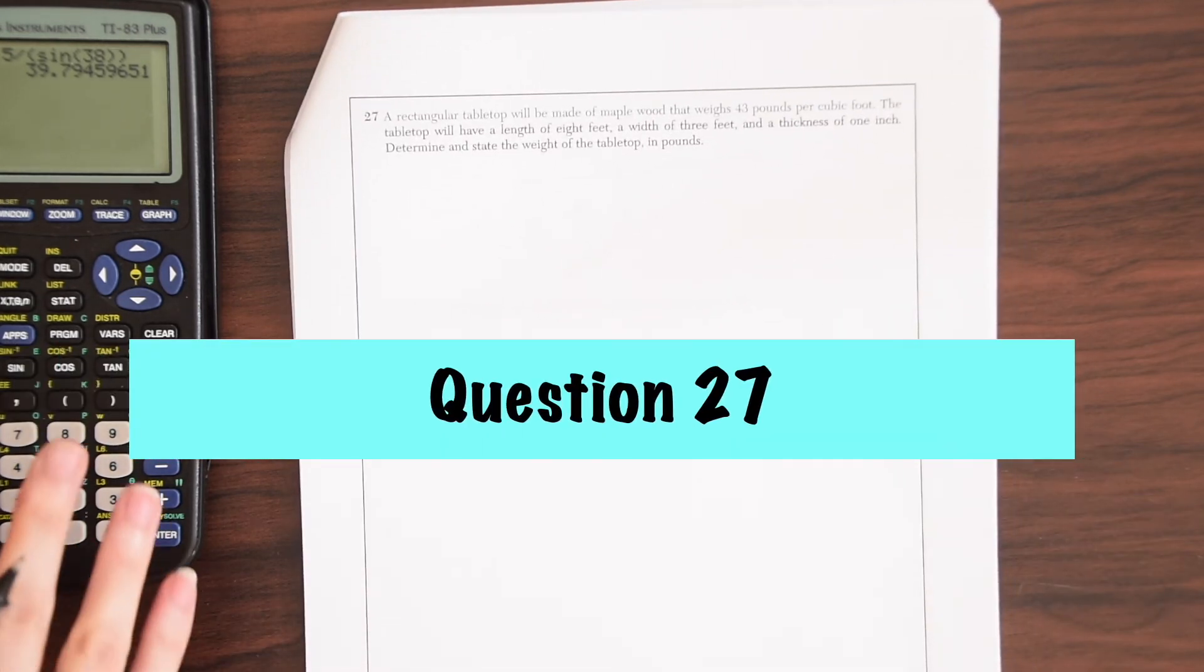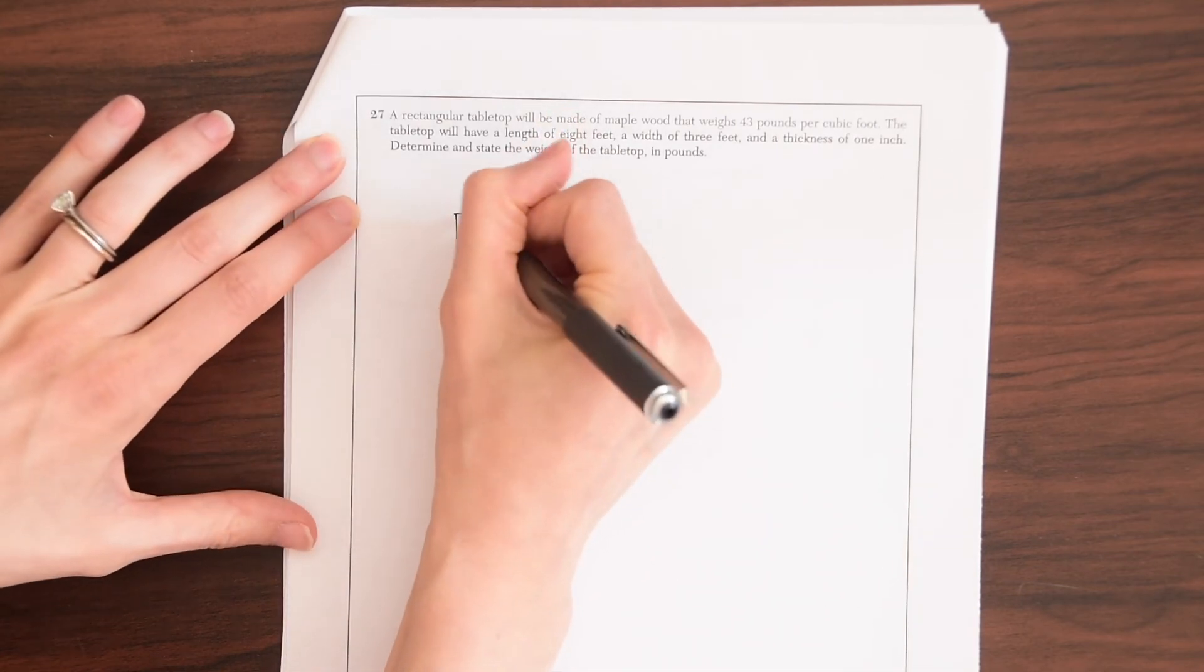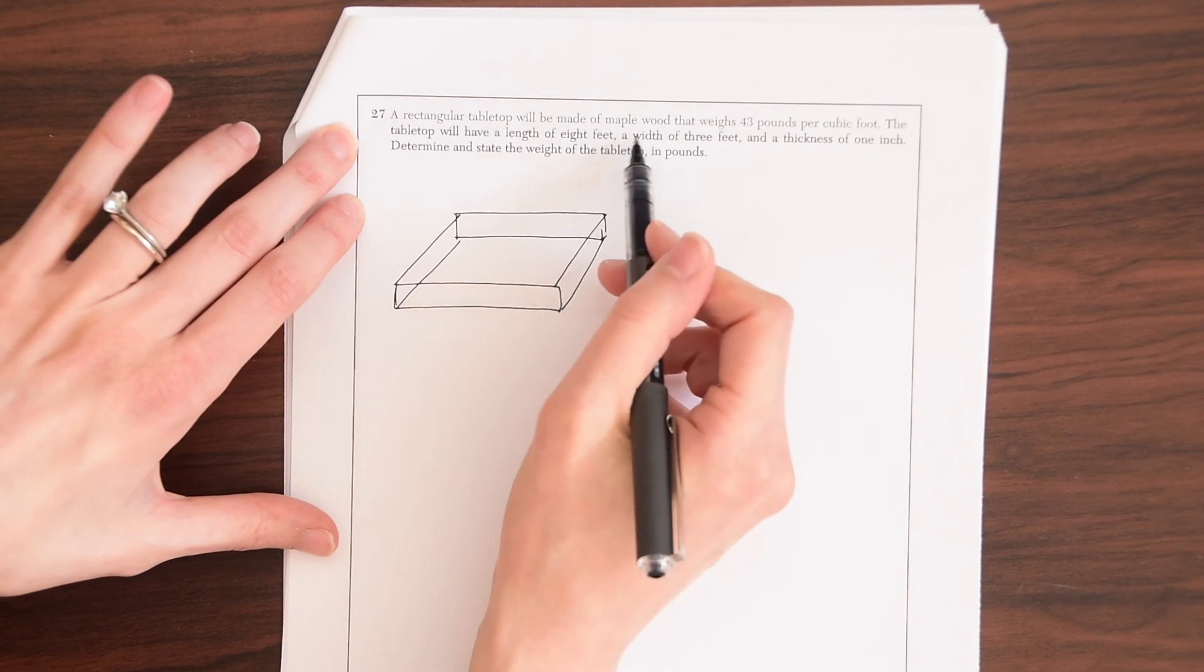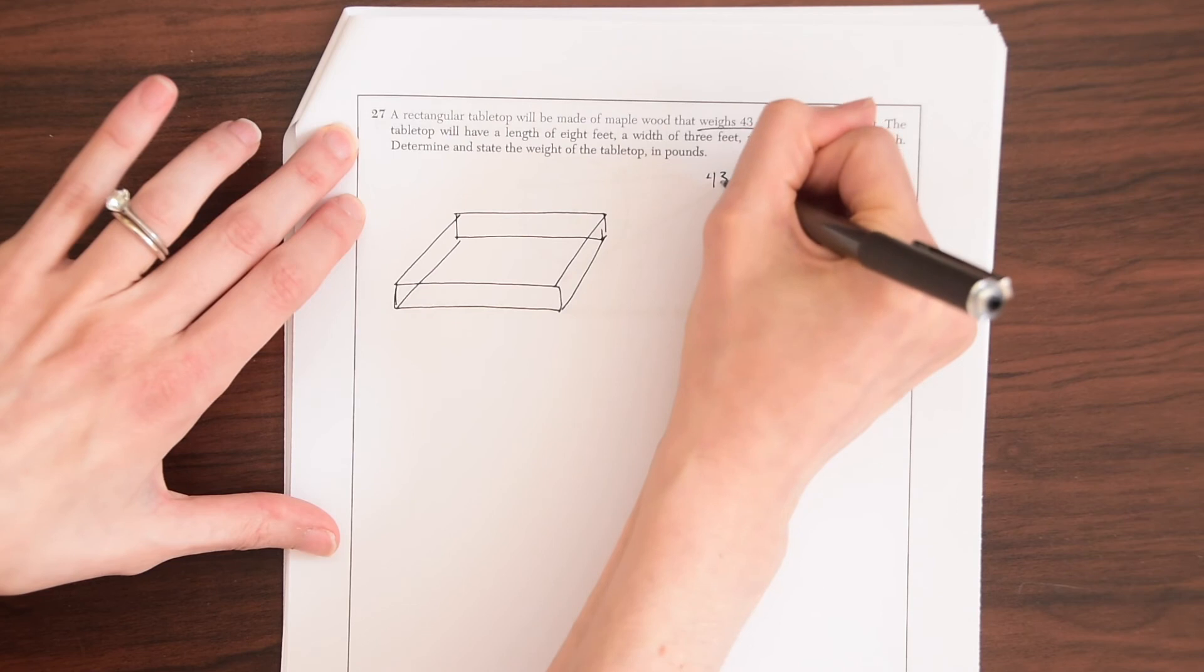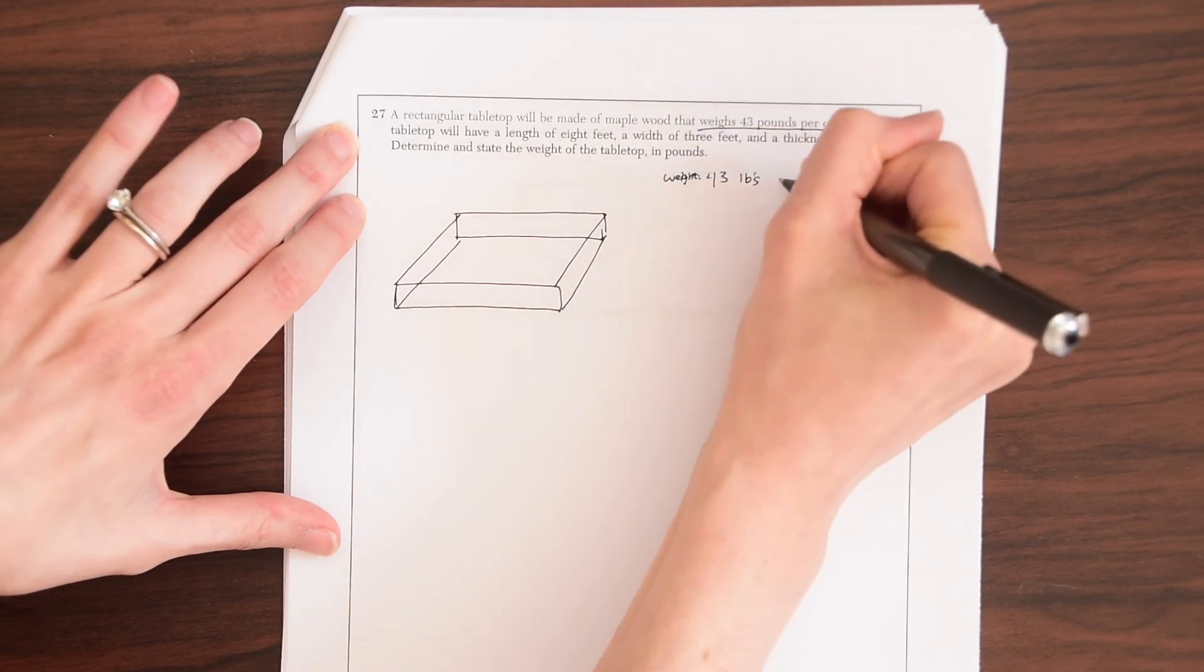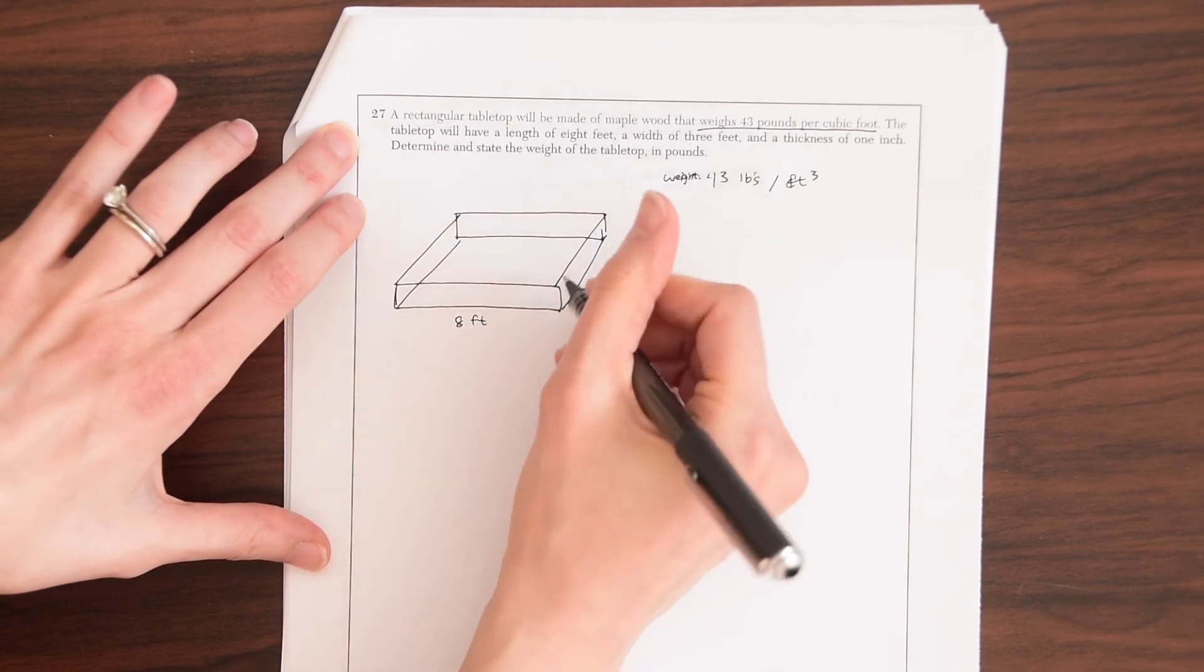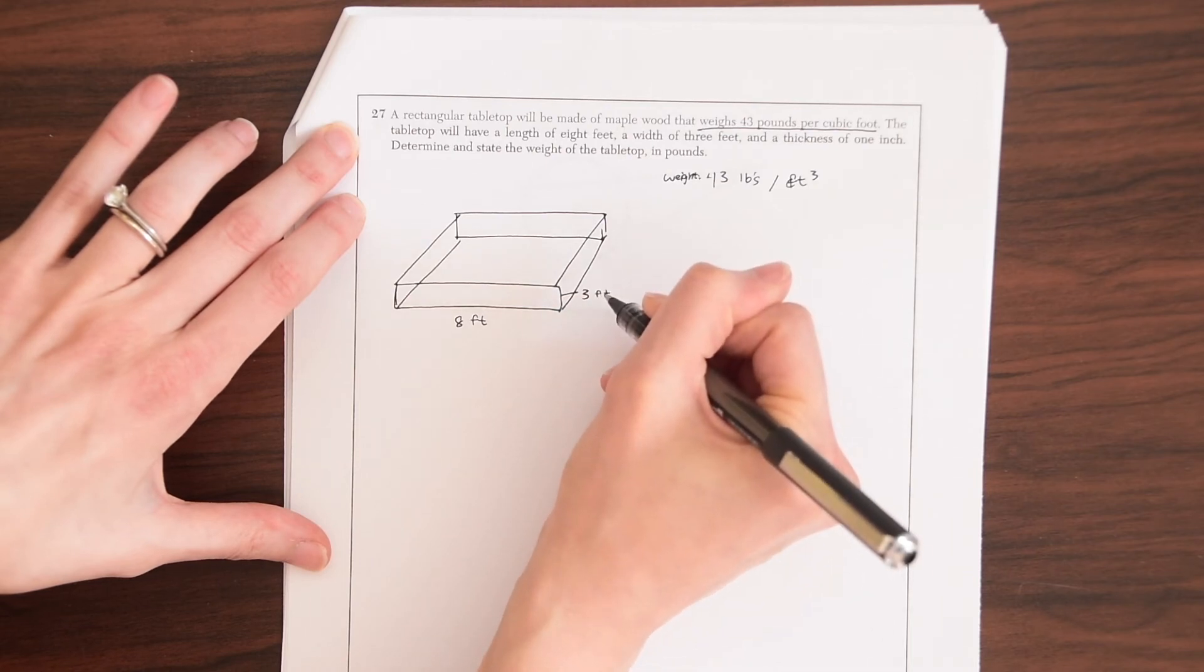On to number 27. A rectangular tabletop will be made of maple wood that weighs, so let's just draw a rectangular tabletop first. Back to our question. So a rectangular tabletop will be made of maple wood that weighs 43 pounds per cubic foot. So the weight is 43 pounds per foot cubed, right?